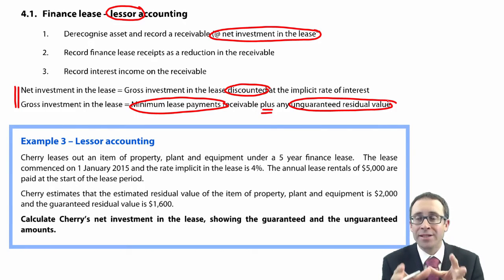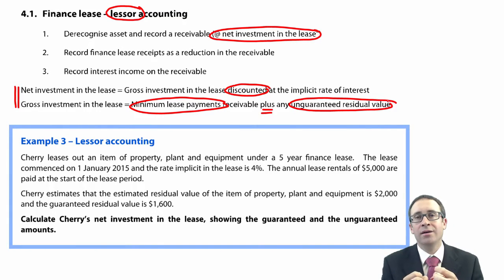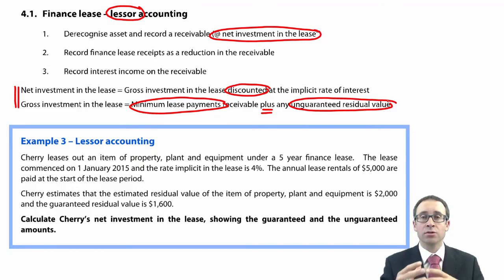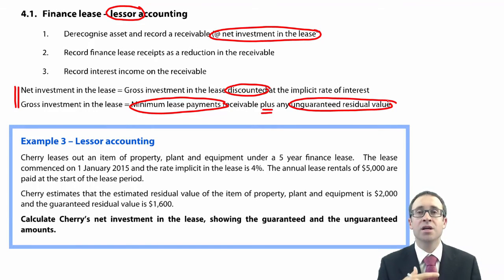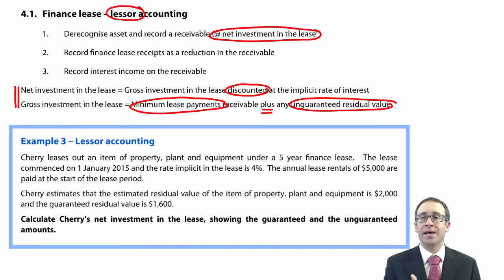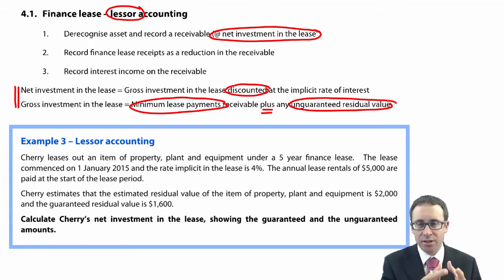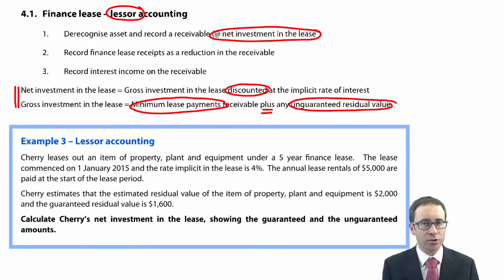What about the bit that is unguaranteed? What happens if the asset comes back into our books and it's not worth as much as expected? If we had an estimated value of say $2,000 and the lessee guaranteed $1,600, the unguaranteed residual value is the difference — $400 — and it's that $400 that is the gross investment in the lease, because that $400 difference is an investment we are making in this lease to get the full value of the asset back in however many years' time. So we need to discount back both the cash receipts to present value and the unguaranteed residual value.